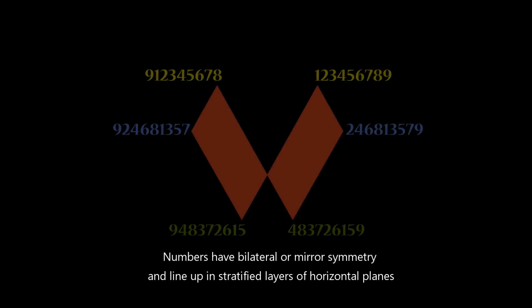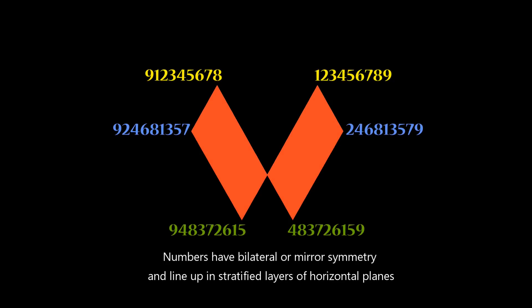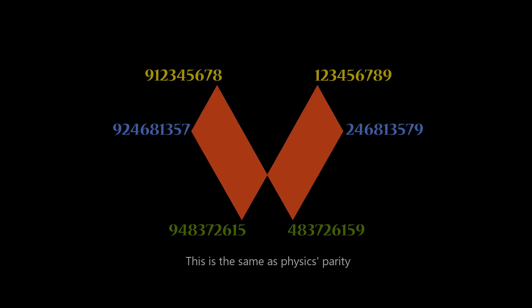Numbers have temporal, spatial, and volumetric qualities. For example, physics is the base 10 number system. In other words, numbers have bilateral or mirror symmetry, and line up in stratified layers of horizontal planes. This is the same as physics parity.